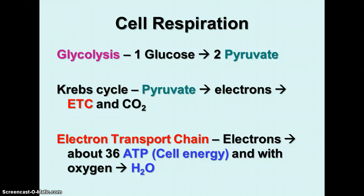To sum up the entire process: glycolysis takes one glucose and splits it into two pyruvate molecules. The Krebs cycle takes the pyruvate, strips off some electrons that it sends to the electron transport chain, and produces the carbon dioxide that is one of the products of cellular respiration. The electron transport chain takes those electrons to produce about 36 ATPs of cell energy altogether, and with oxygen produces the water that is the other product of cellular respiration.